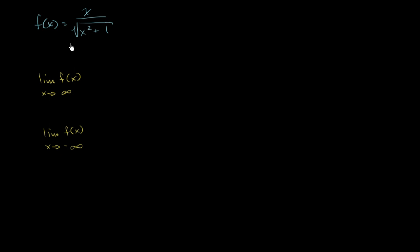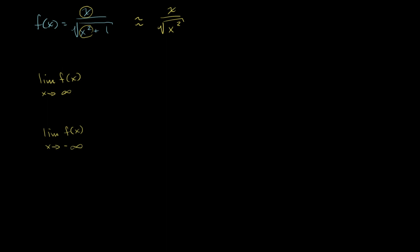I'm not doing this in an ultra-rigorous way, but more in an intuitive way — thinking about what this function approximately equals as we get larger and larger x's, whether very positive or very negative. In the numerator we only have one term, the x term. But in the denominator we have two terms under the radical. As x gets larger and larger, the x squared term is going to really dominate the 1. When x is a million, you have a million squared plus 1 — the denominator is dictated by x squared. So this is approximately equal to x over the square root of x squared; the 1 doesn't matter for very large x.